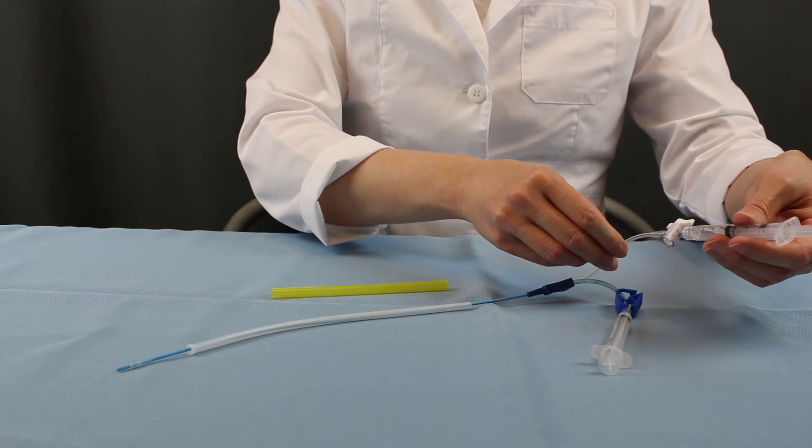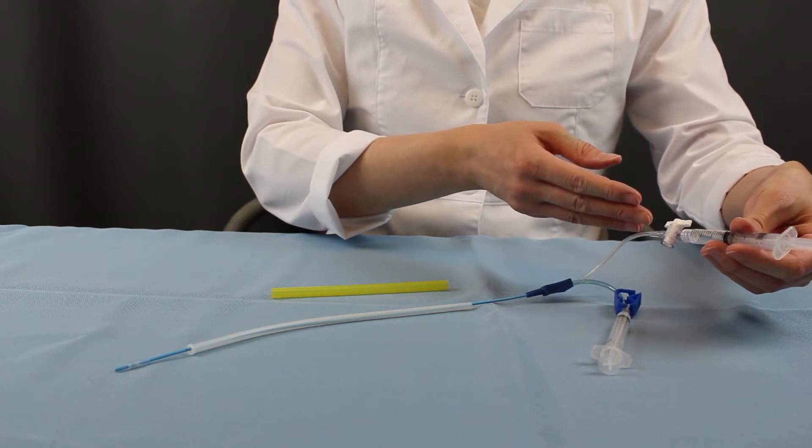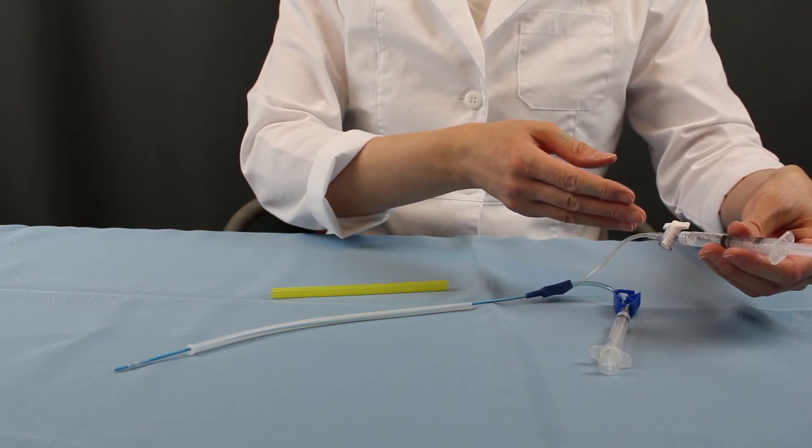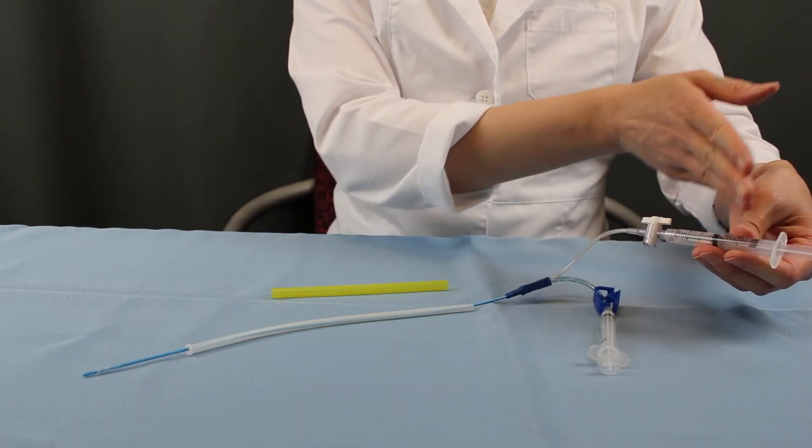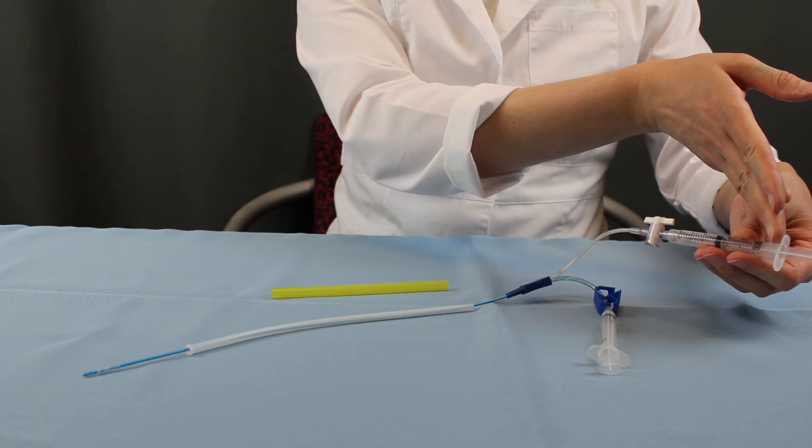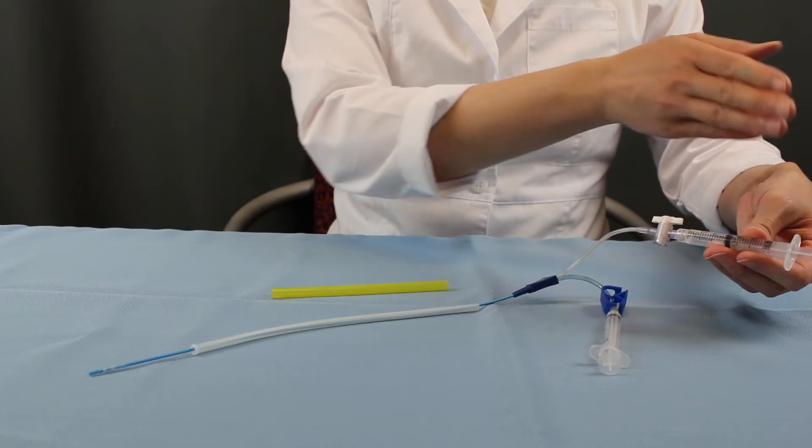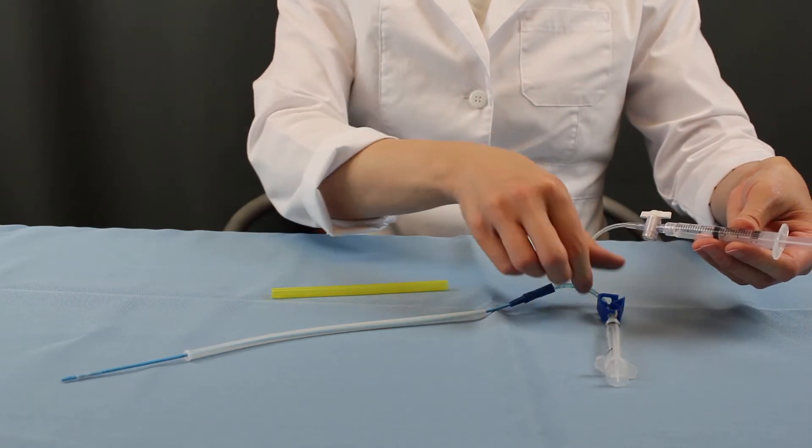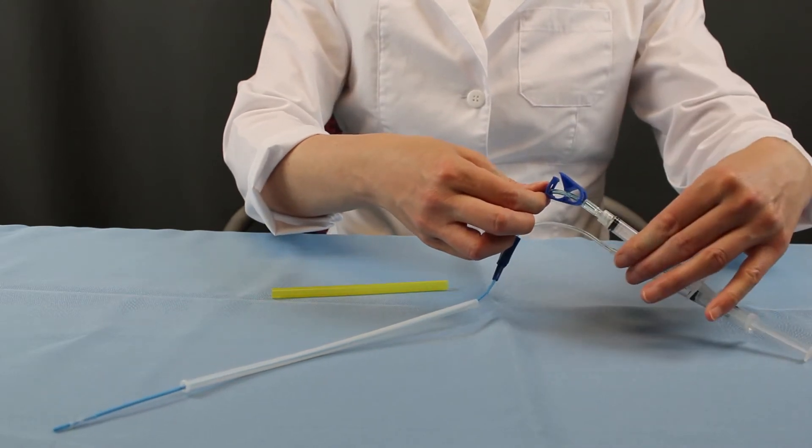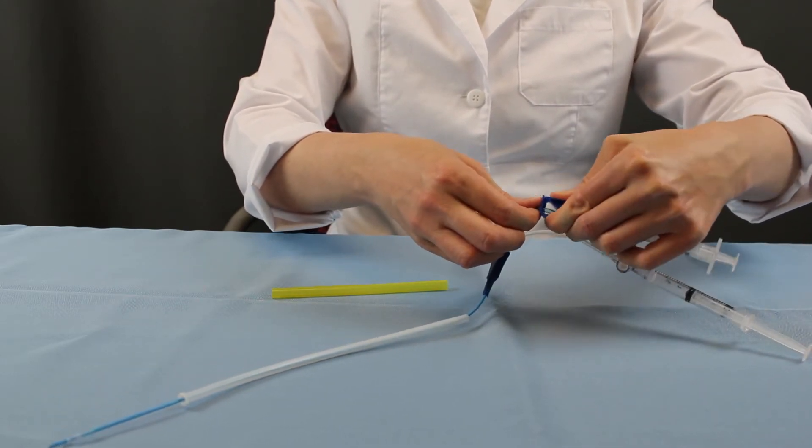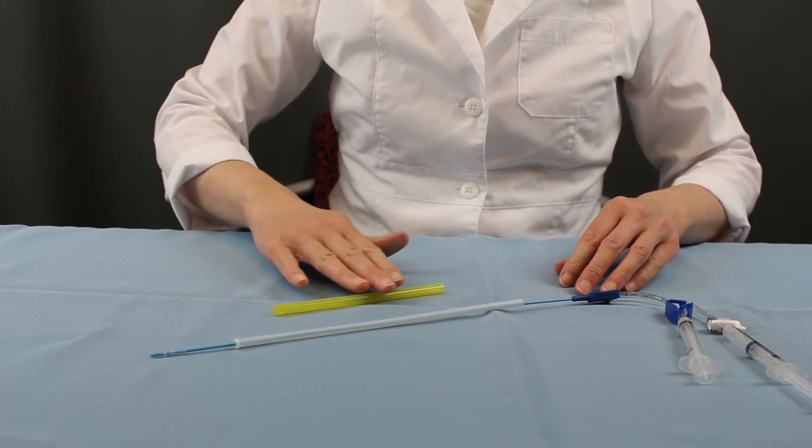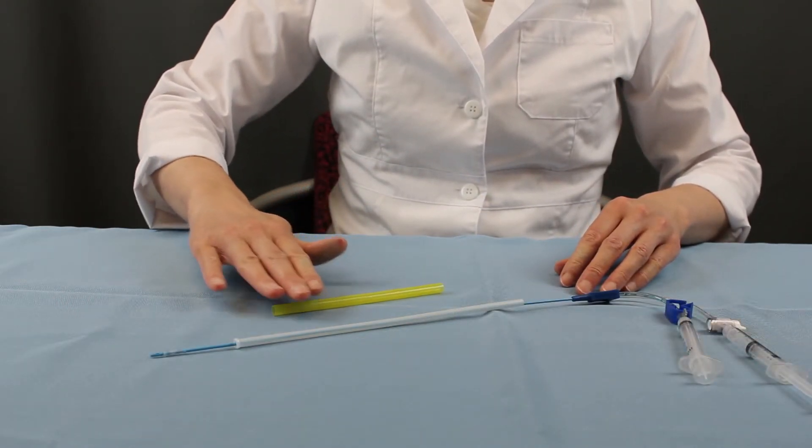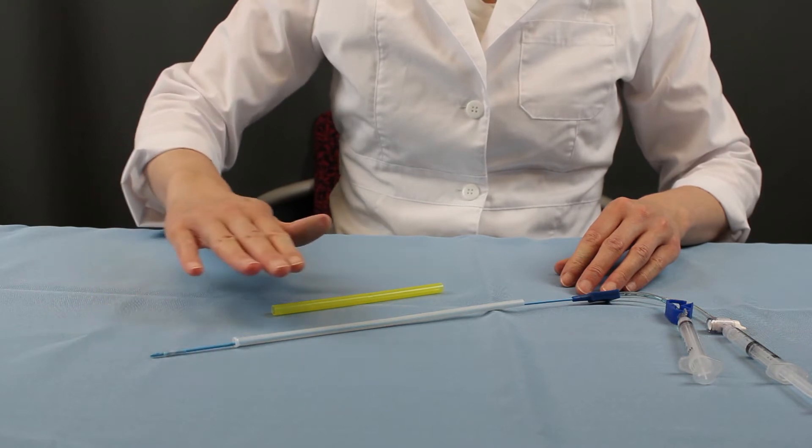The syringe attached to a stopcock is preset with the correct volume of air: 1.5 milliliters for the 5 French catheter or 3 milliliters for the 7 French catheter. The other components include a traditional pinch clamp oriented the same way as an IV. Every Thomas Medical catheter includes a yellow tip protector to safeguard the distal end during transportation.